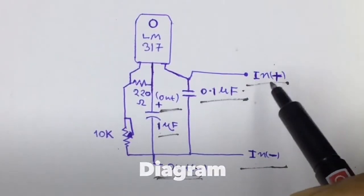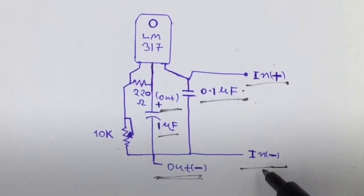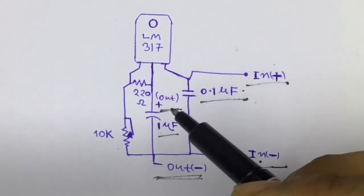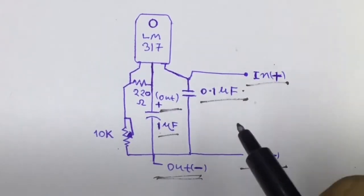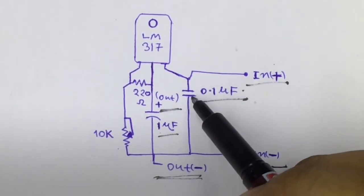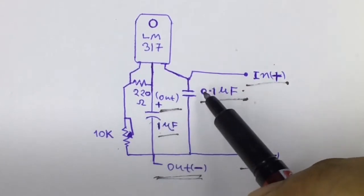So it's your circuit diagram. This is your input positive and input negative. It's a common ground, so output negative is the same and this is your output positive. You can skip these capacitors but better to have them.